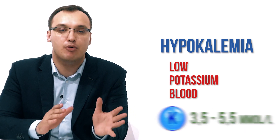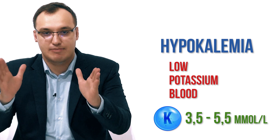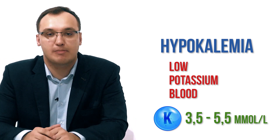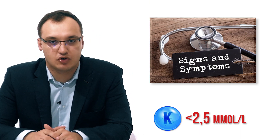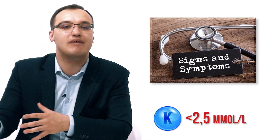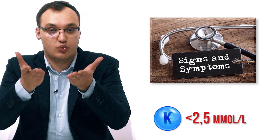The normal potassium level in the blood is 3.5 to 5.5 millimole per liter, depending on the lab. When we have less than 3, symptoms appear, and when we have less than 2.5, it is very severe. Usually the symptoms disappear when we increase the level by giving medications to the patient.